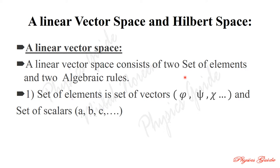Two sets of elements means: a set of vectors — psi, phi, and chi — and a set of scalars — a, b, c, and so on. These are the two sets of elements we use in a linear vector space: the set of vectors and the set of scalars.